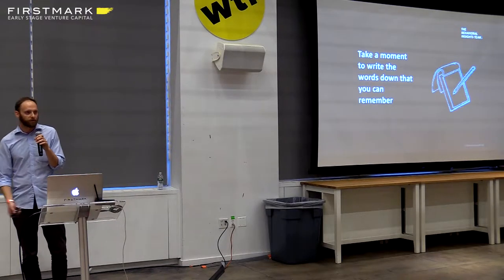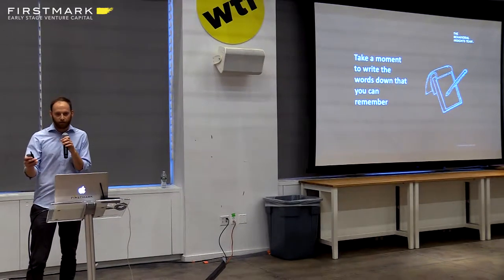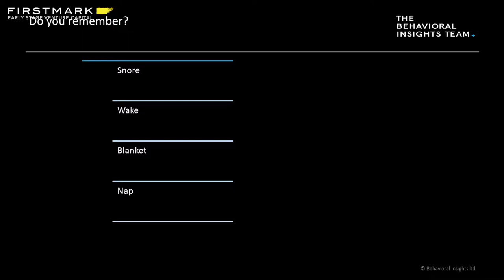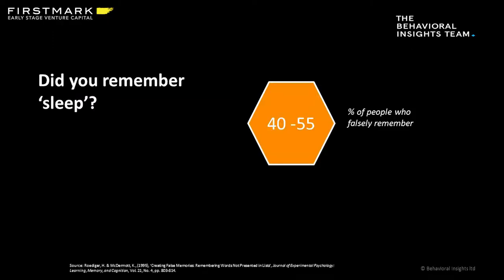Now we're going to see how you all did. By a show of hands, if you have the word 'snore,' raise your hand. That's about a quarter of folks. Who has the word 'wake'? Even a little more — like a third at least. How about 'blanket'? About a quarter. 'Nap'? Maybe a third. 'Sleep'? Oh, better — like half. If you said 'sleep,' maybe you were dreaming, because it was not there on the list.